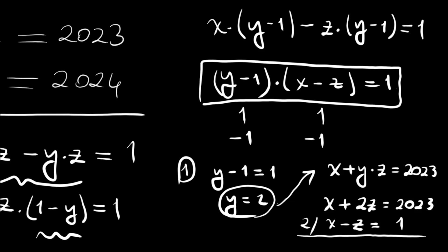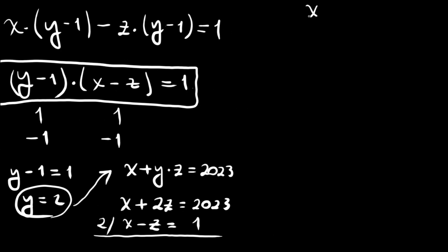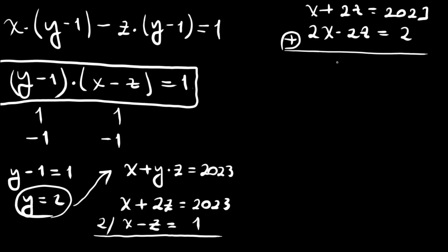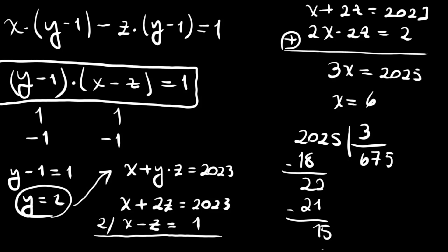Multiplying x minus z equals 1 by 2 gives 2x minus 2z equals 2. Adding to x plus 2z equals 2023, we get 3x equals 2025. Dividing: 2025 divided by 3 equals 675, so x equals 675.